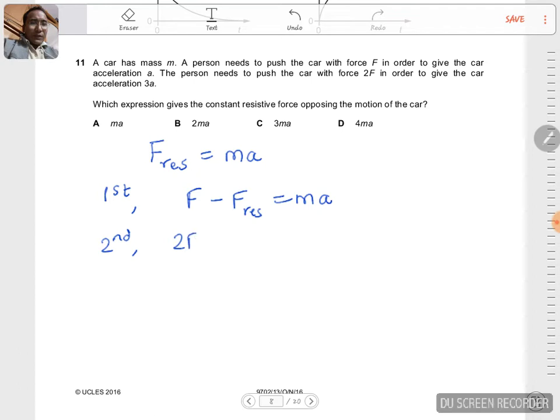Which means it's equal to 3MA. Now we need to solve these two equations to get the value of F_res. If we solve the equations, which is not so difficult,